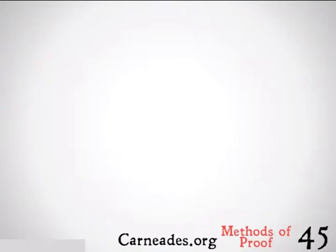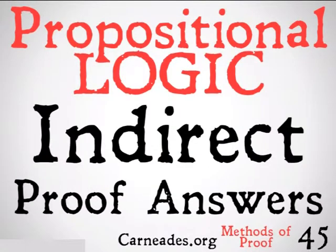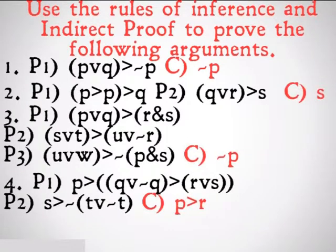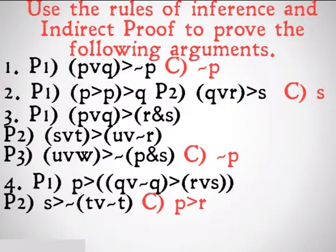Welcome back to 100 Days of Logic with Carnades.org. Today we are going to be doing our final day of propositional logic, looking at the answers to the problems presented for indirect proof. Our goal is to use the 18 rules of inference and indirect proof to get from the premises to the conclusion. Note that at least one of these problems you could use conditional proof as well, but our goal here is to be practicing indirect proof, so I would strongly encourage you to try to find a way to do it with indirect proof. If you've already solved these problems, want to check your answers, gotten stuck, or just want the answers, follow me. If not, I suggest you pause the video as there are spoilers to follow.